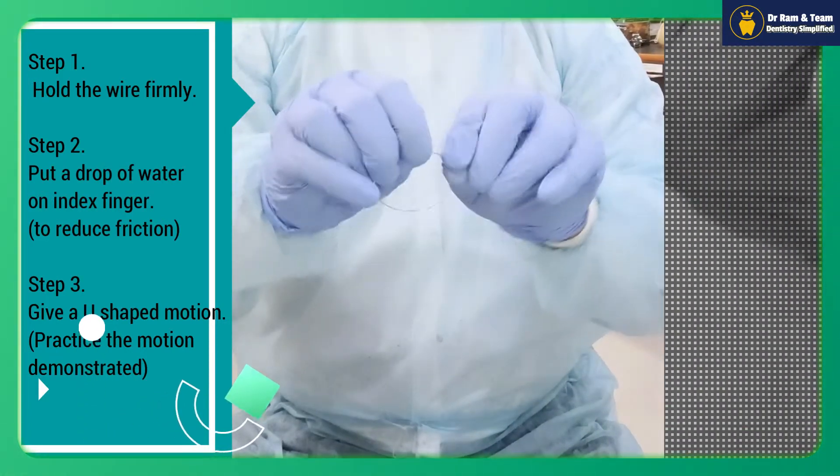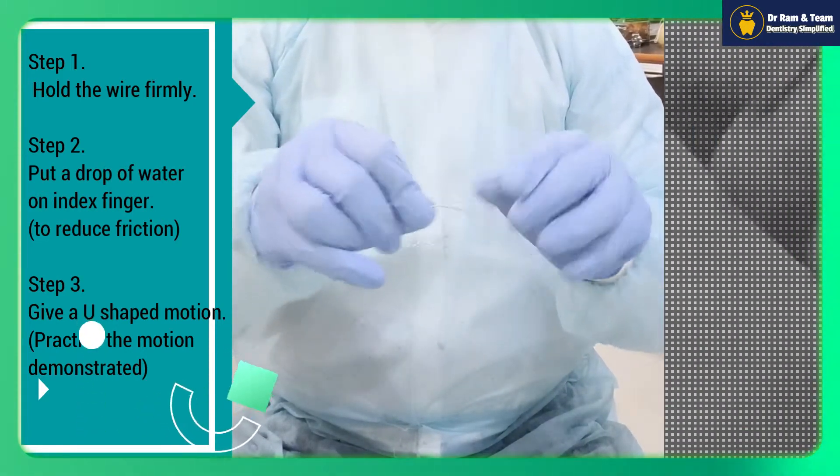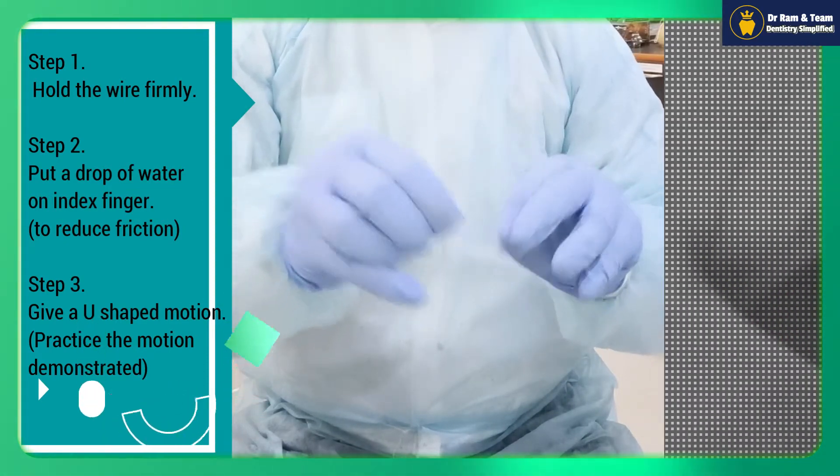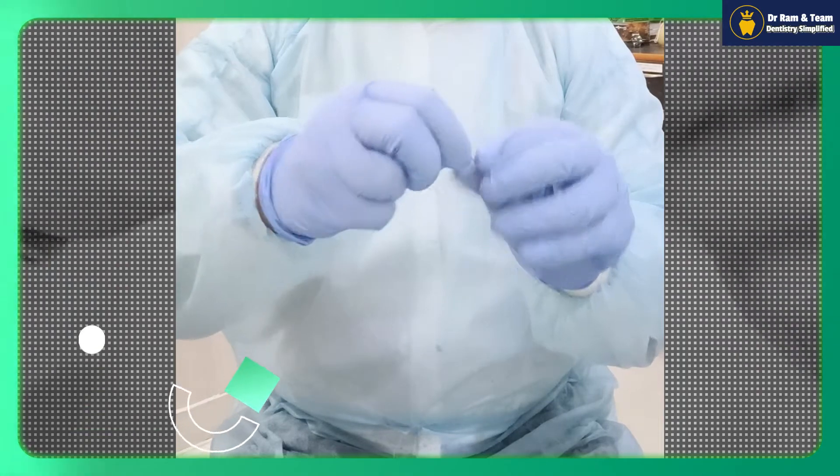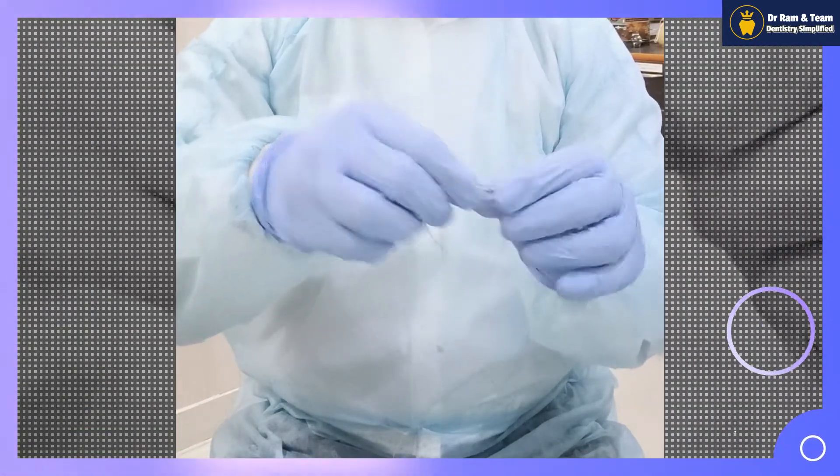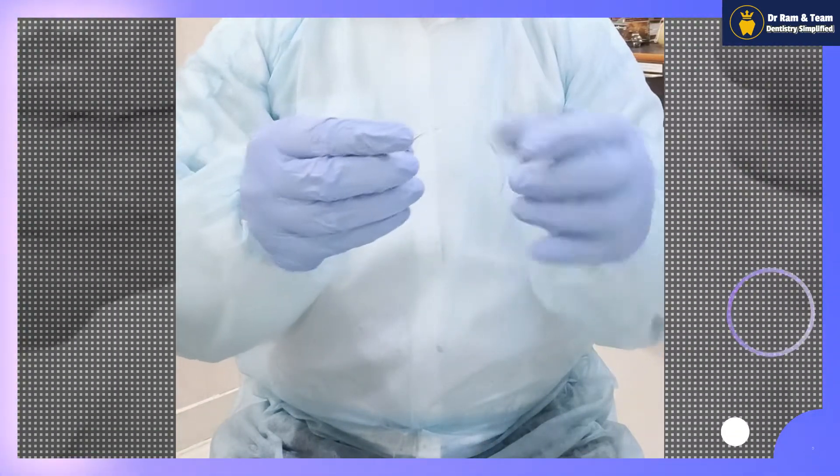Straighten the wire from the intercanine region to molar region. Keep in mind the arch form of the patient, then twist it and adjust it into the arch form which is desired by you.